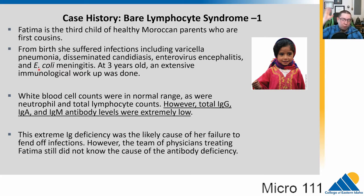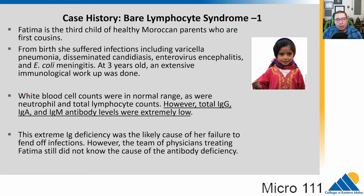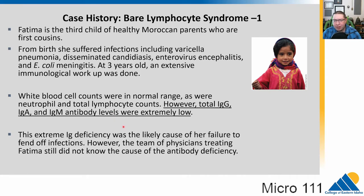At three years old, because of all of these infections, they did a full immunological workup. The white blood cell counts all looked normal — neutrophil counts and total lymphocyte counts. However, when they looked at total antibodies — total IgG, IgA, and IgM — all were very, very low. This Ig deficiency is probably why she's not able to fight off these infections, and while we don't know the exact cause, we know something is wrong in that system.